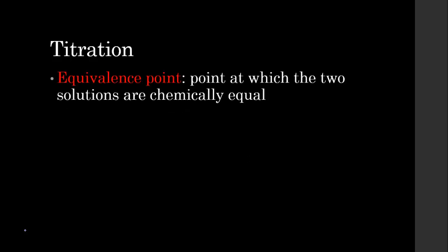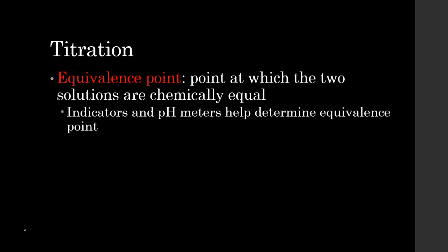When we work with titration, we are trying to find an equivalence point, the point at which the two solutions are chemically equal. And we're going to use those indicators and those pH meters to help determine that equivalence point. Just looking at it or knowing how much we're adding, we're not going to really be able to tell exactly how much that should be.